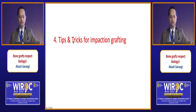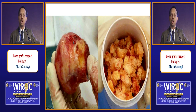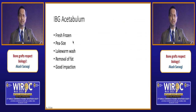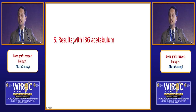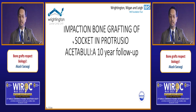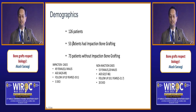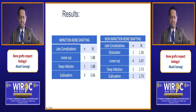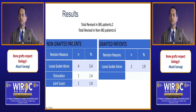Tips and tricks for impaction bone grafting: use fresh frozen allograft or autograft, prepare pea-sized grafts. Fresh frozen is definitely better than freeze-dried. Give a lukewarm wash to remove all fat, which enables good impaction. For results with IBG: a 10-year follow-up study of 126 patients — 53 with impaction bone grafting, 73 without, with similar demographics and bone loss — showed loosening of the cup in one case in the IBG group versus four in the non-IBG group.